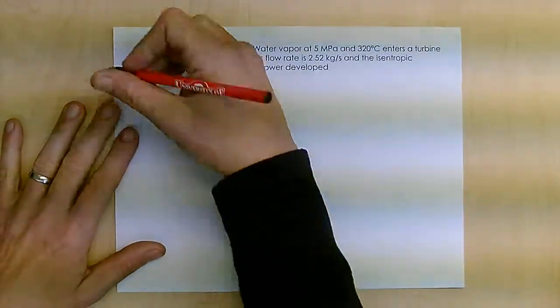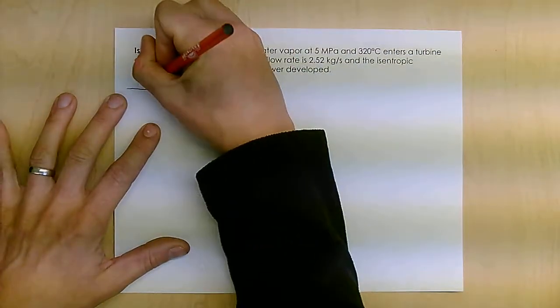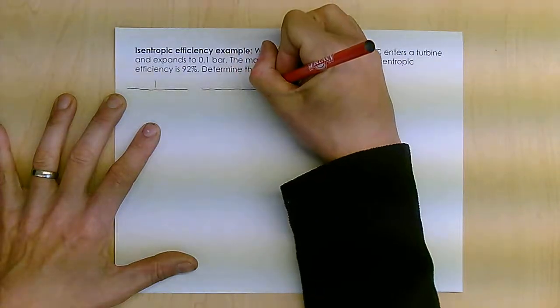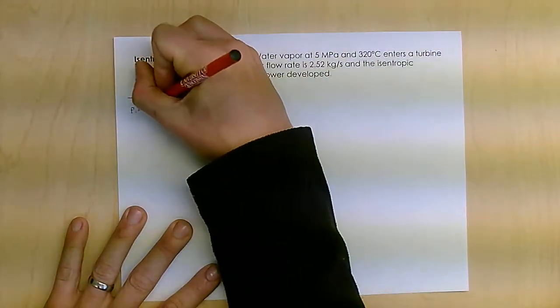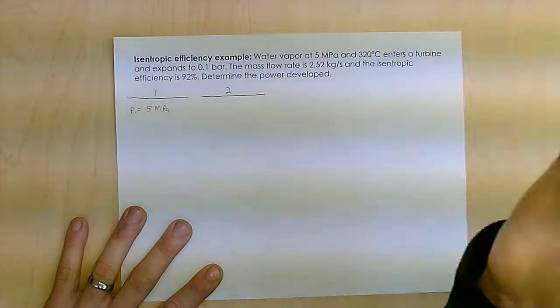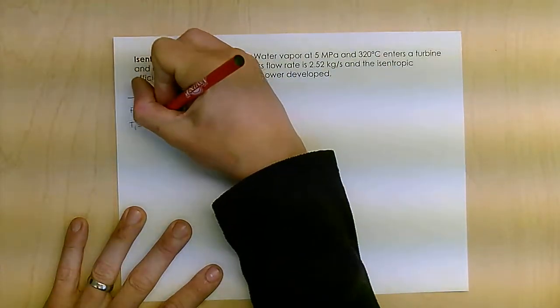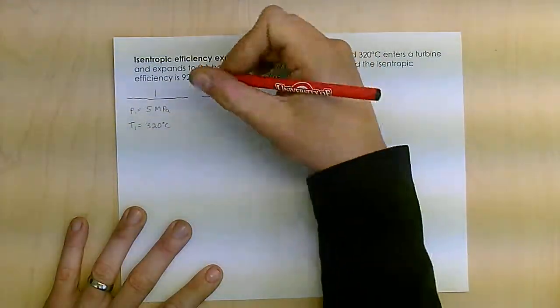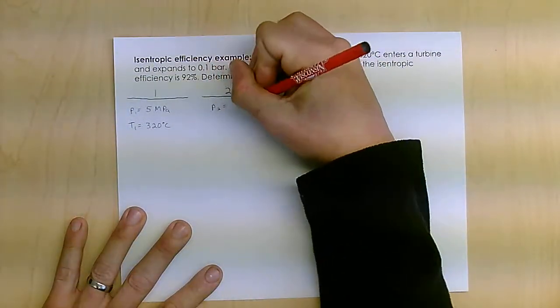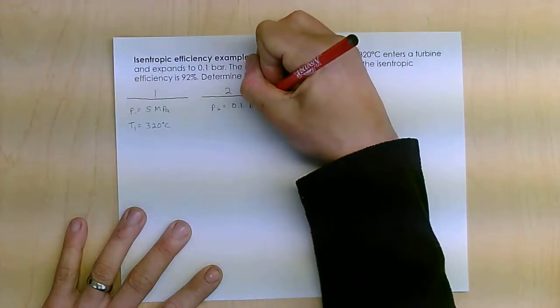So what we're going to do is find our states before and after the turbine. As it enters, pressure 1 is 5 megapascals, temperature is 320 degrees Celsius, and it expands to P2 of 0.1 bar.